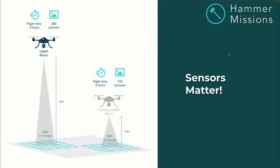Sensors matter. From the diagram, at 25 meters a drone with a 100 megapixel camera will capture 280 pictures at a flight time of two hours and a GSD of 11 centimeters — that's ground sampling distance. Whereas a drone with a 42 megapixel camera at 10 meters will take five hours to produce 733 pictures at only 0.13 centimeters GSD.